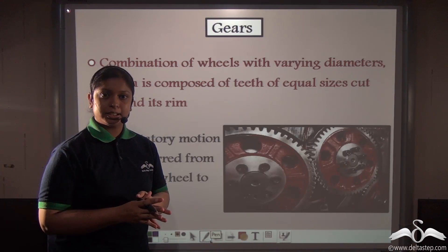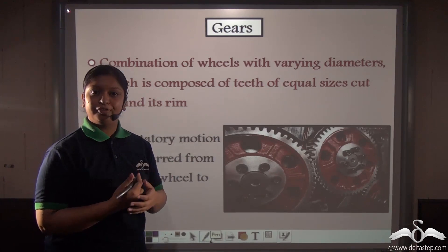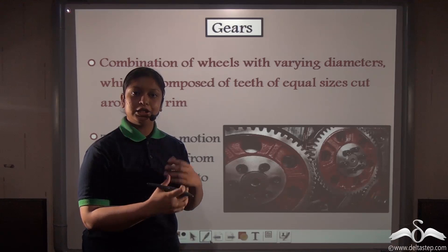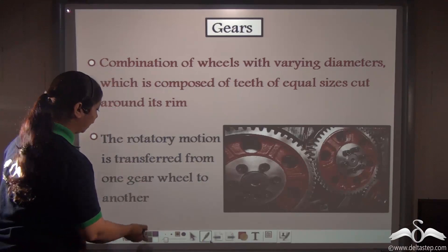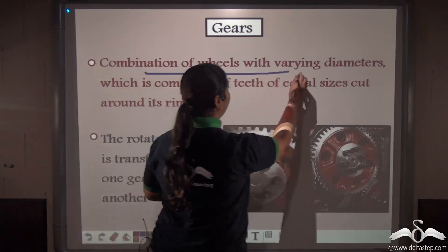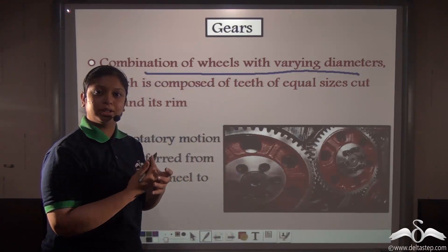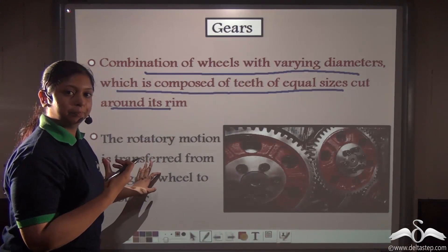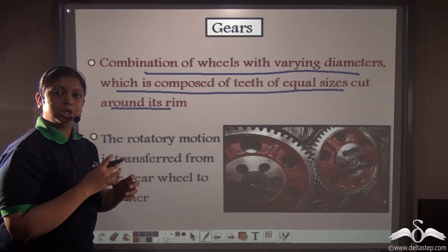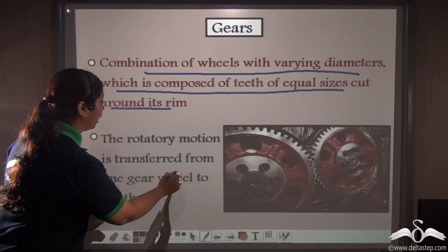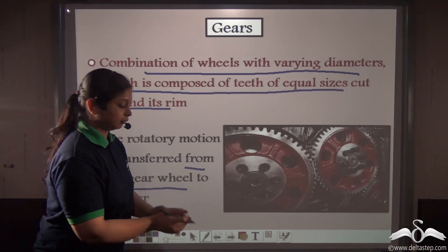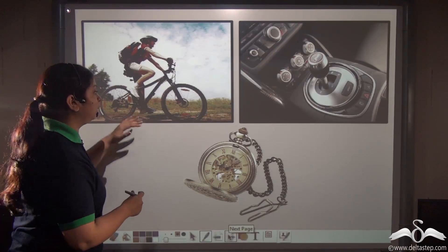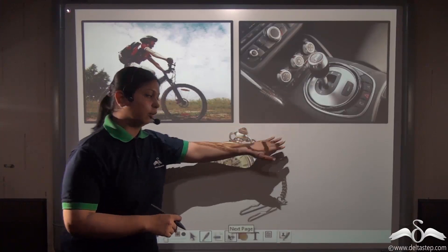You already know what gear systems are. In gear systems, a number of wheels with teeth around their rim are connected to one another, and the rotation of one wheel is transferred to another. Gears are a combination of wheels with varying diameters — one wheel is smaller than the other — composed of teeth of equal sizes cut around their rim, and the rotatory motion is transferred from one gear to another. Gear systems are used in all power-driven machines like bicycles, the gear box of your car, and also in a pocket watch.